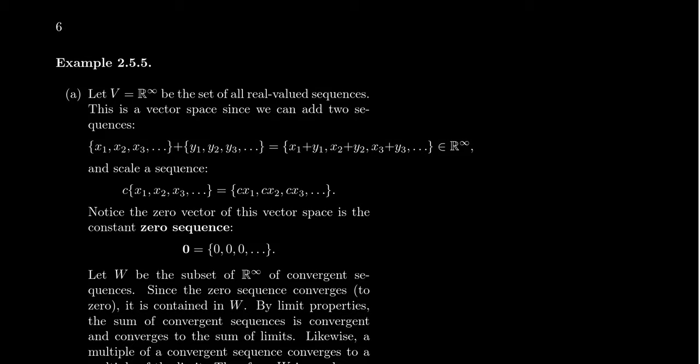The first vector space I want to talk about is R-infinity. R-infinity is going to be the set of all real-valued sequences — numbers x1, x2, x3 going off towards infinity. This is actually a vector space that was very important for those who studied Calculus 2. Near the end of the semester in Calculus 2, you talk about sequences and series, where the objects in play are these sequences, which are vectors in an infinite dimensional vector space. Series are just sums of those infinite vectors.